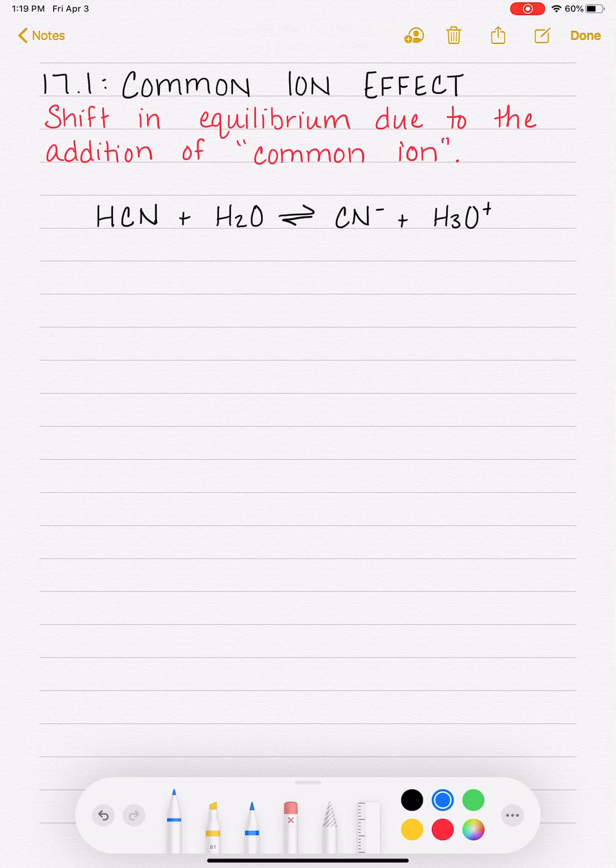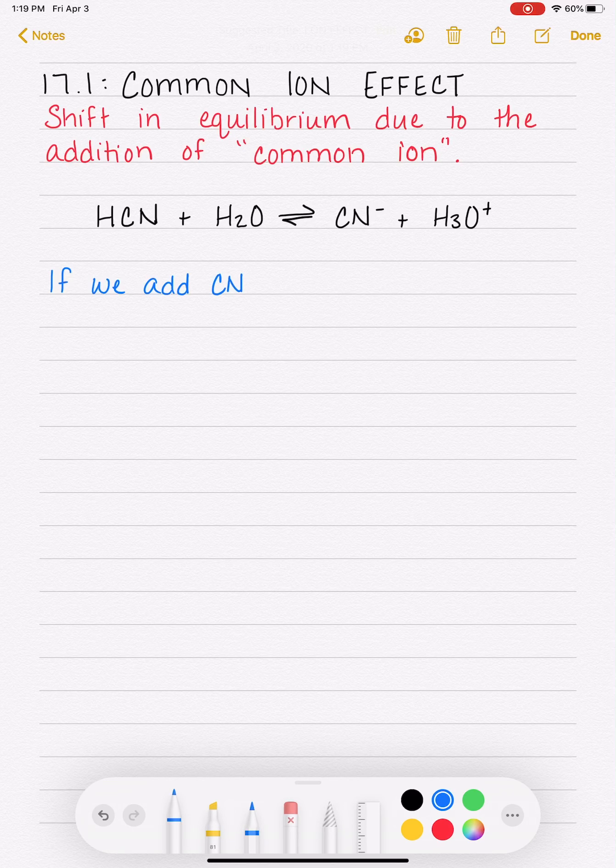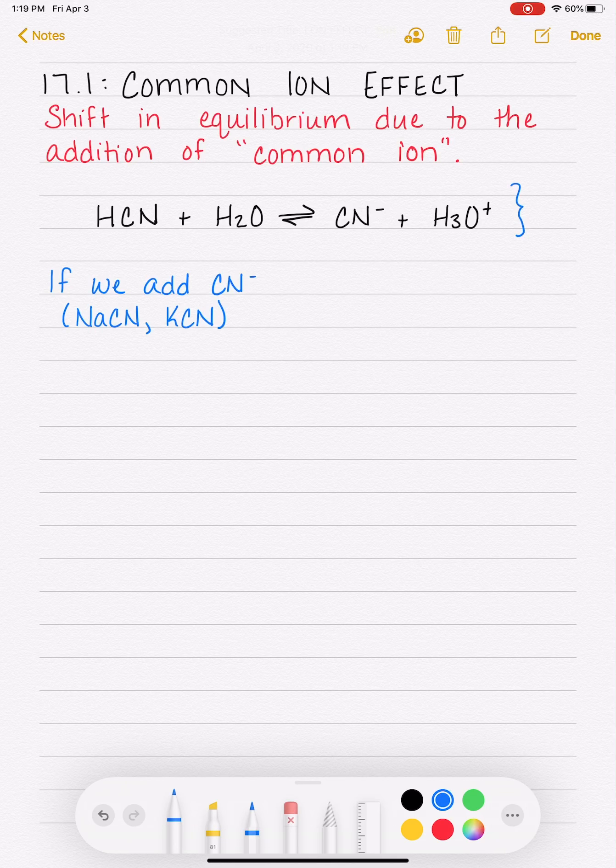If we add cyanide, CN minus, so maybe we're adding it as NaCN, or maybe we're adding it as KCN. There's got to be some kind of cation in there. But the important part is, if we're adding a cyanide ion, a source of cyanide ion, to this particular equilibrium...